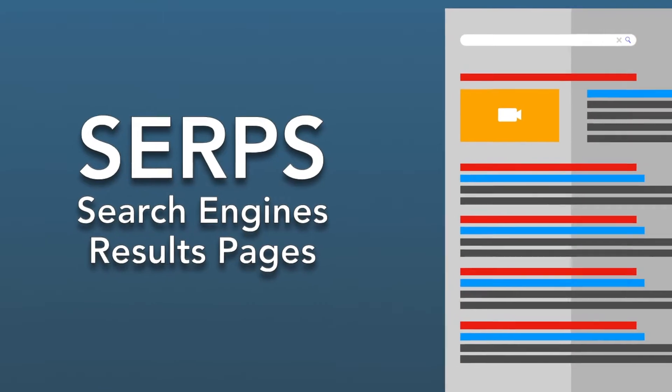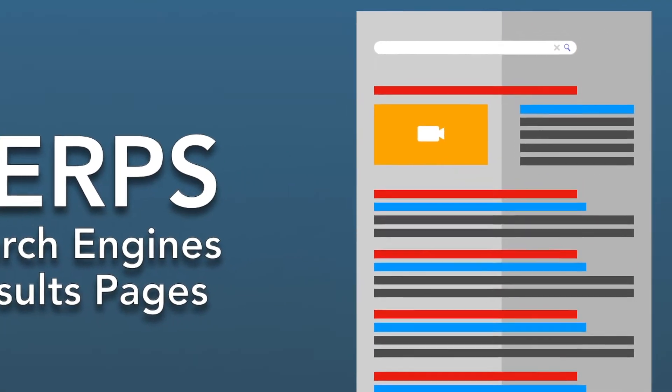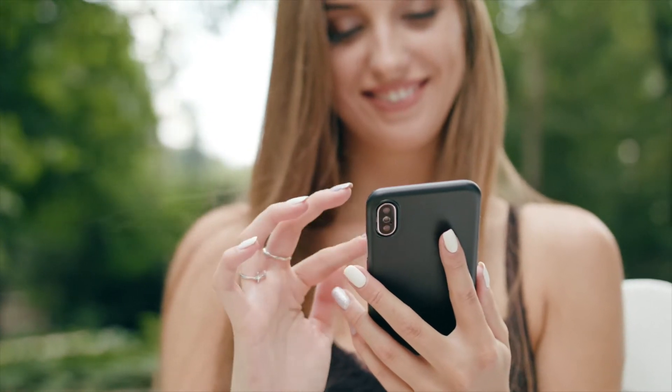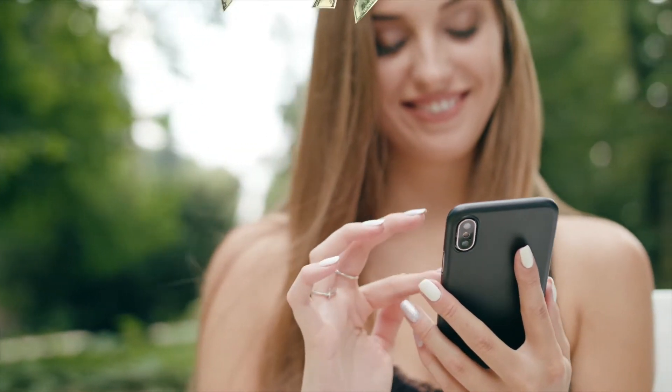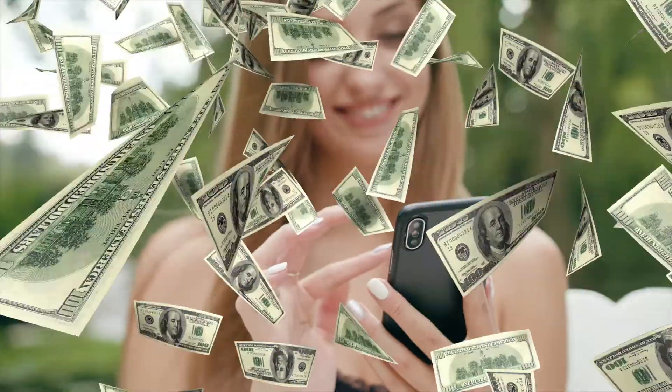Search engines make their money from advertising displayed on the SERPs, which contain both organic and paid results from advertisers. In order to sell more advertising, the search engine's ultimate goal is to answer the user's searches as well as possible, in an attempt to make them come back, spend more time on the SERPs, and therefore be faced with even more advertising.